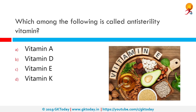Which among the following is called the anti-sterility vitamin? The correct answer is Vitamin E. Originally called the anti-sterility factor or anti-sterility vitamin, tocopherol comes from the Greek words tokos, meaning offspring, and phero. Vitamin E is essential for normal reproduction, muscle development, formation of red blood cells and helping our body use Vitamin K.